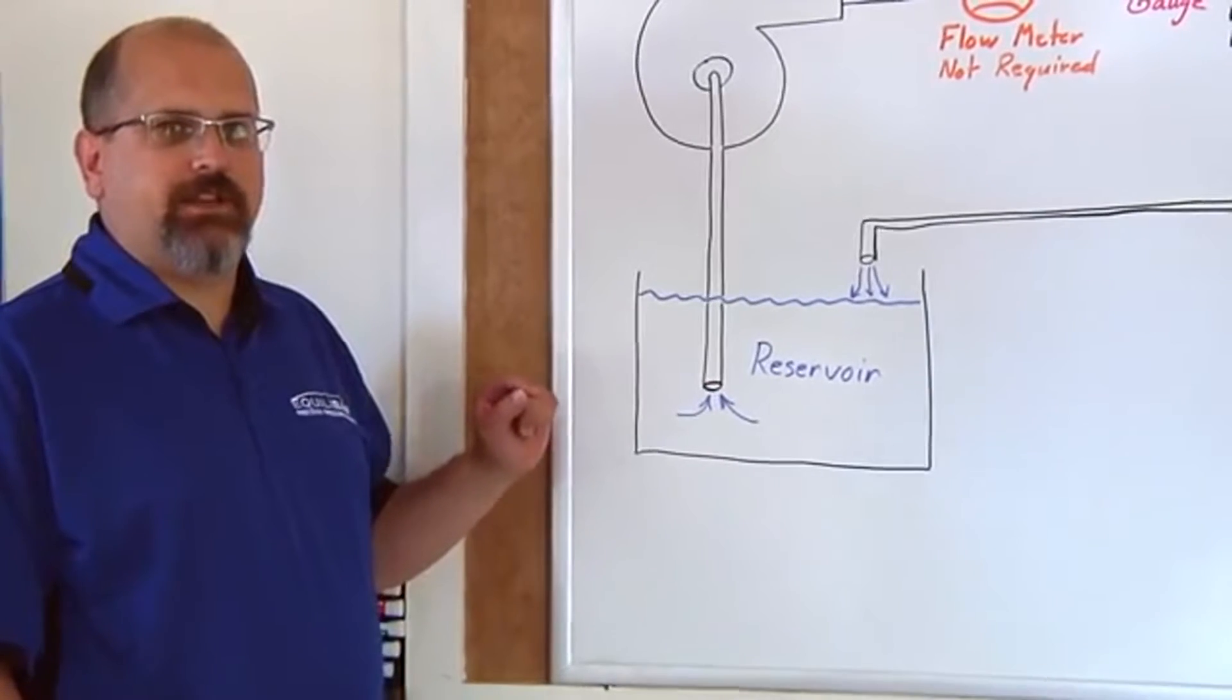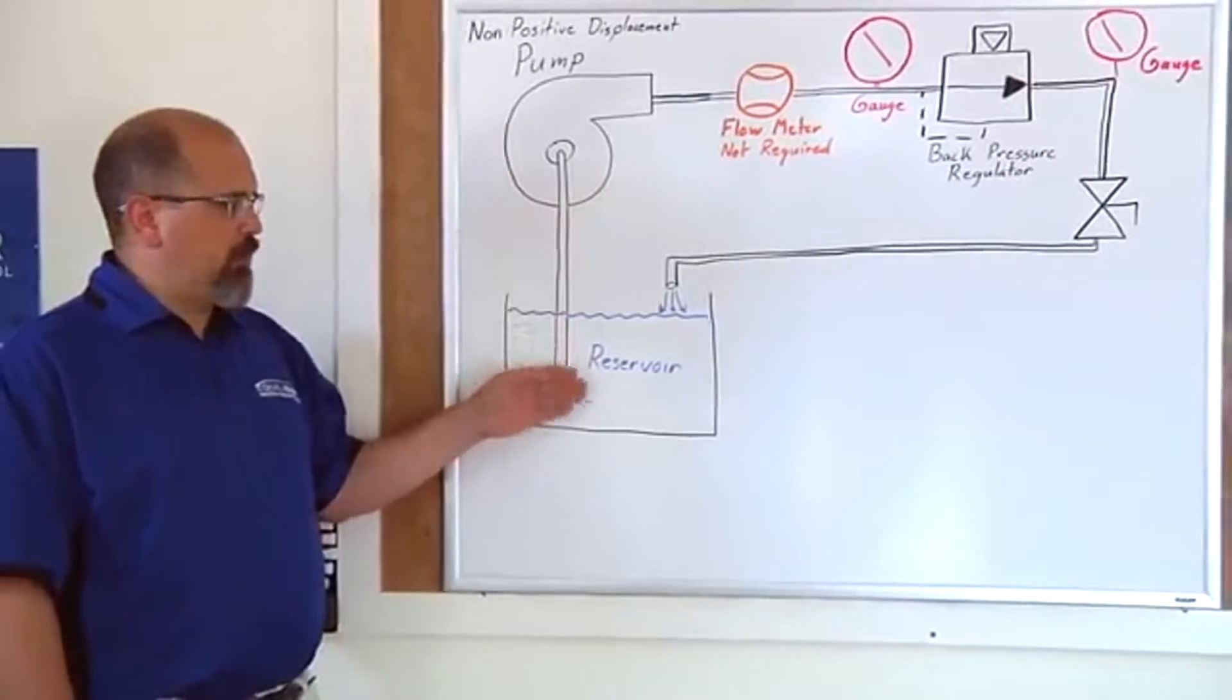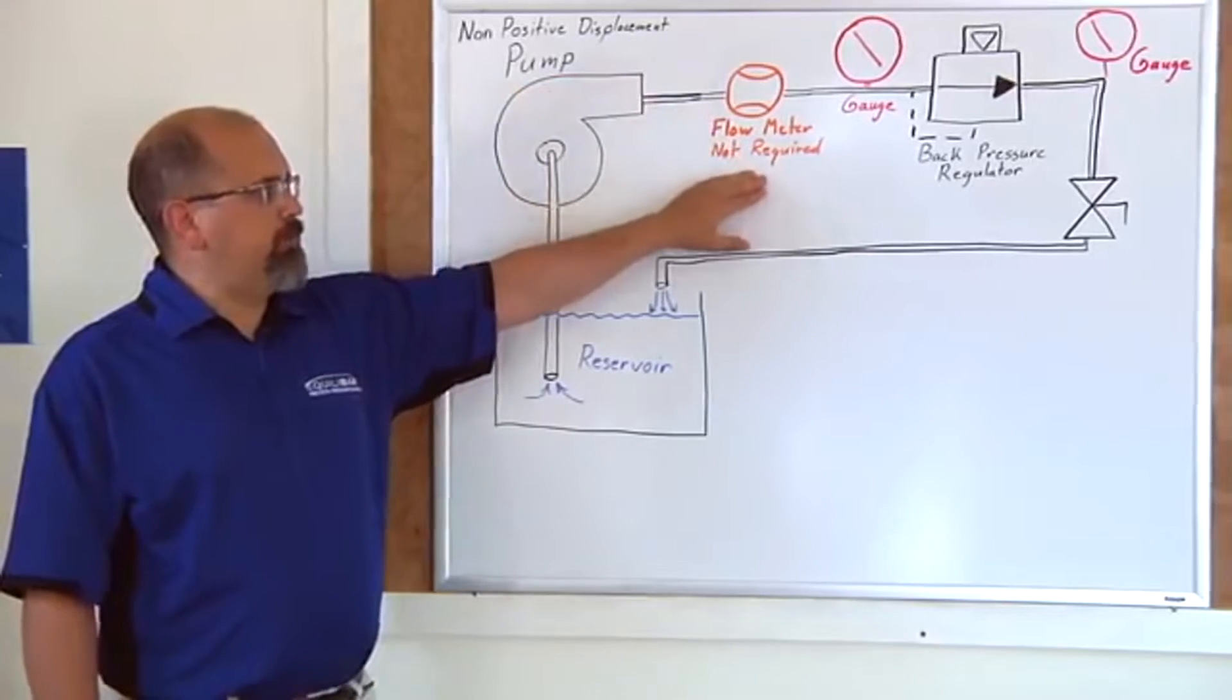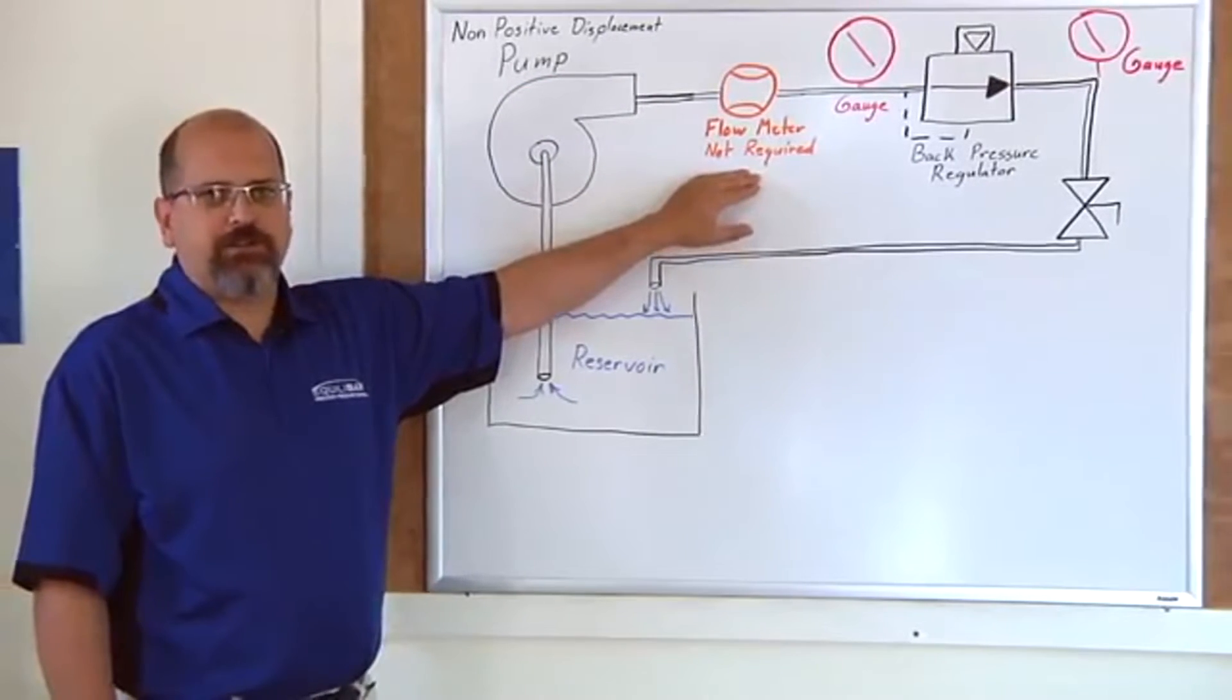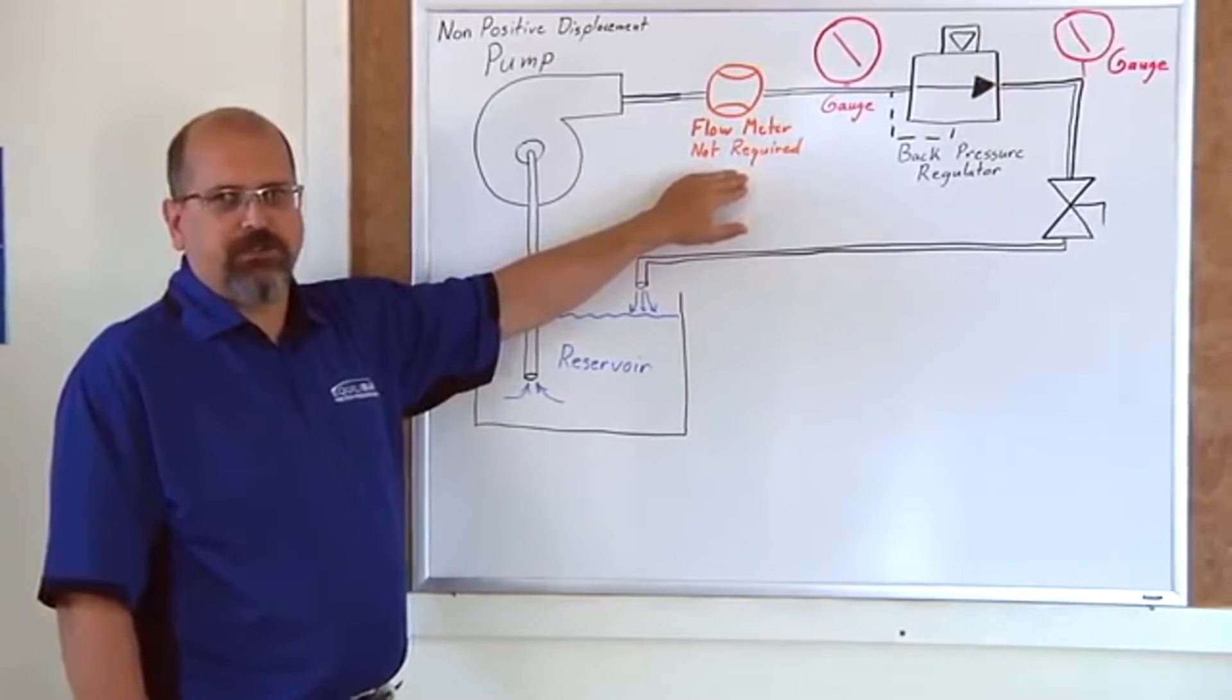What we'll be demonstrating in the lab is a non-positive displacement pump drawing water from a reservoir. The output pressure of the pump will go through a flow meter. Flow meter is not required, it's just there to let us know what the actual flow in the system is.